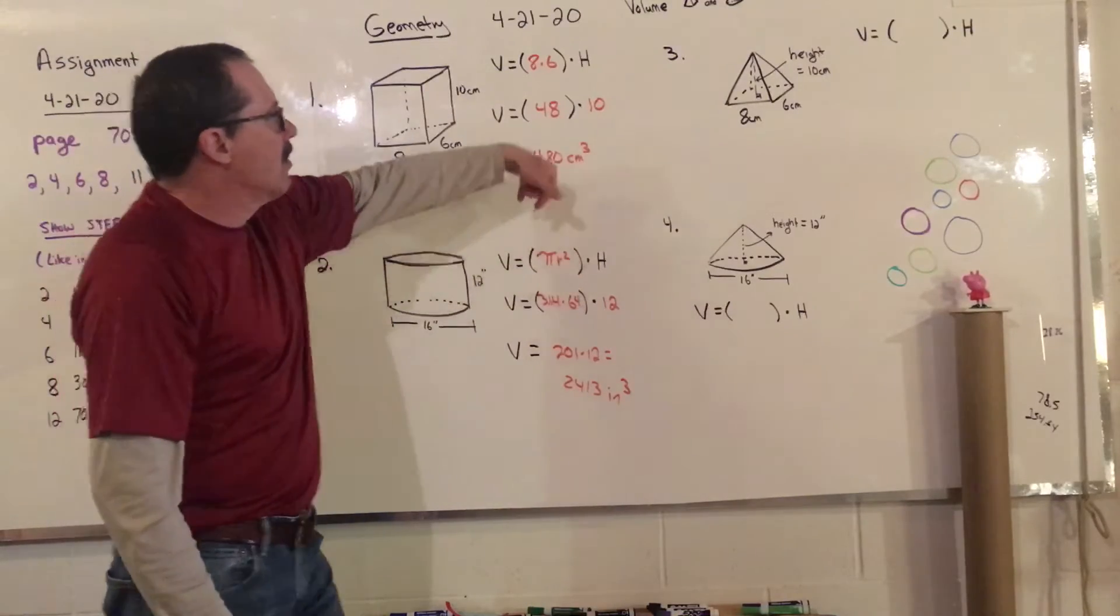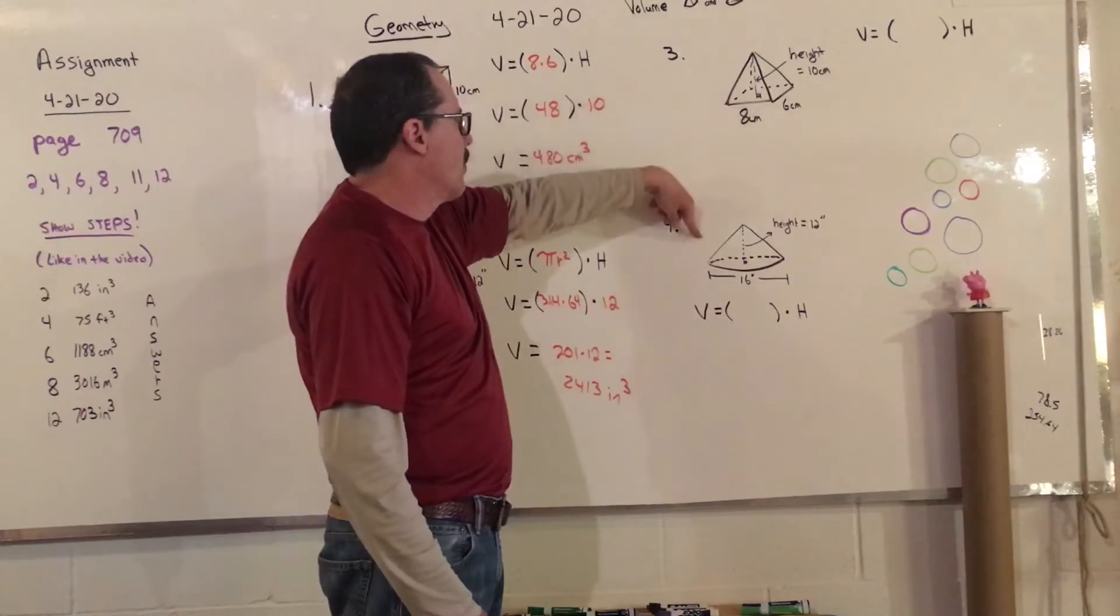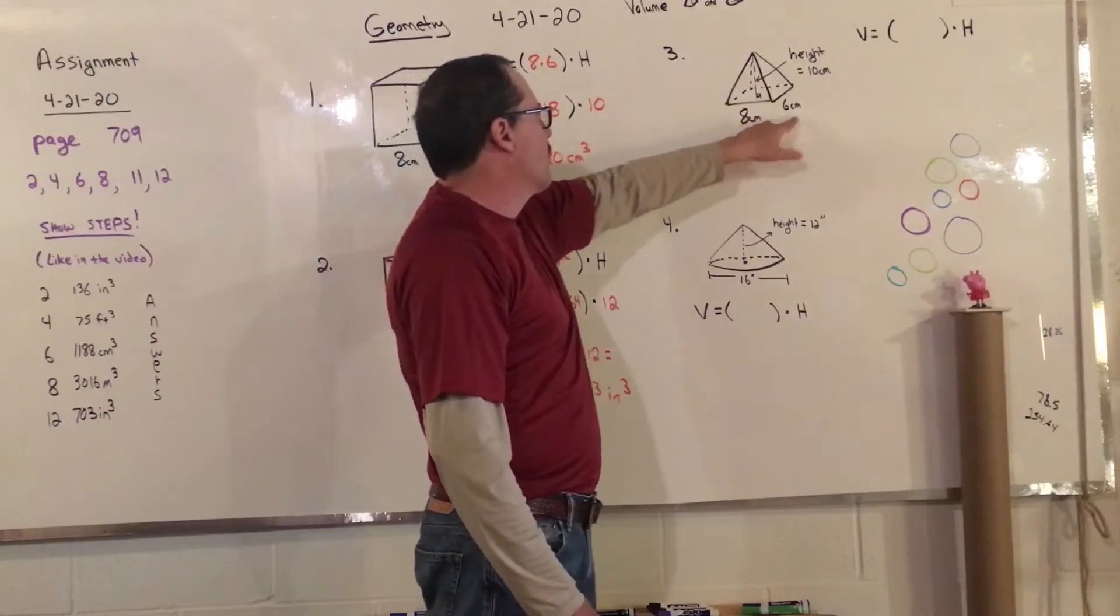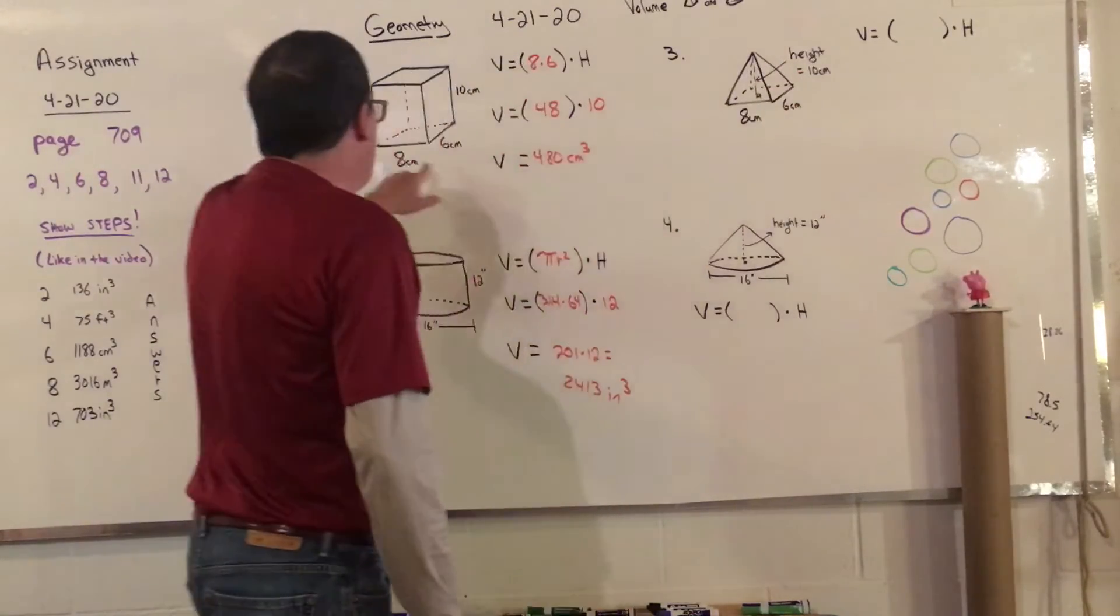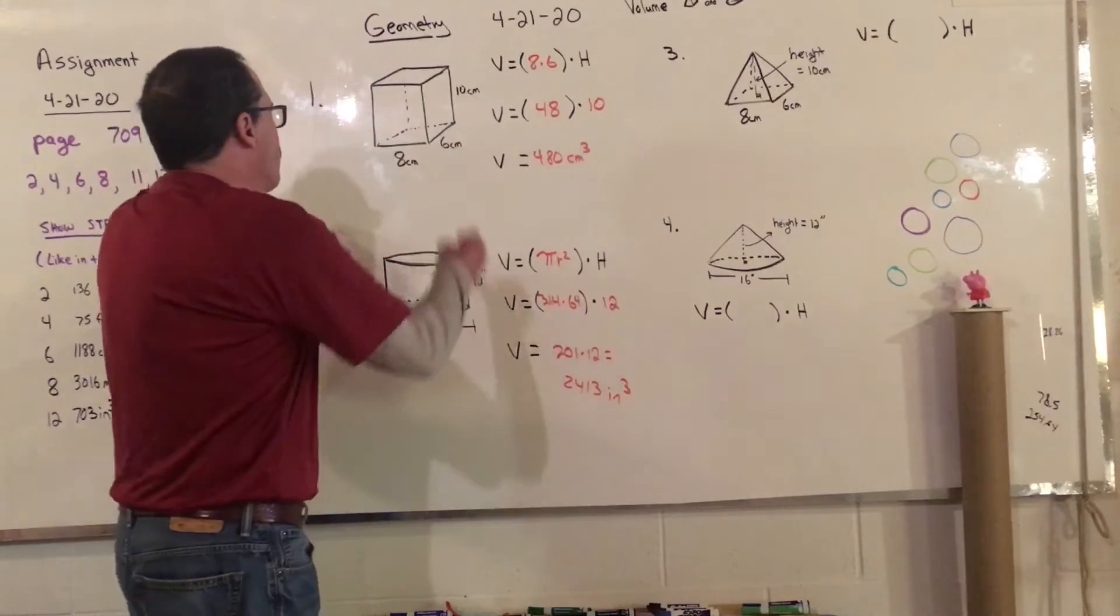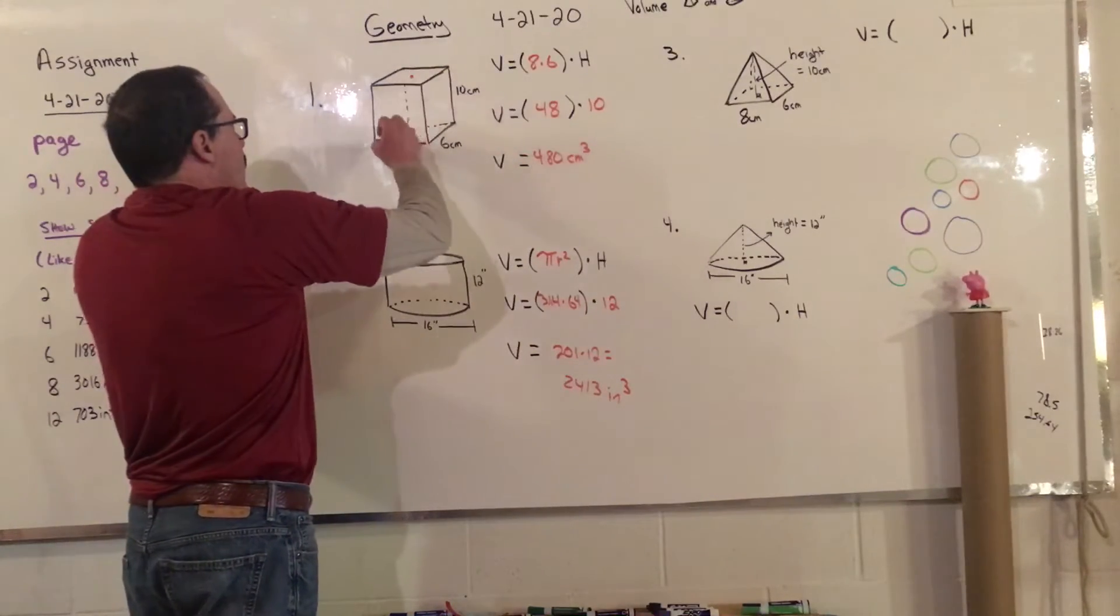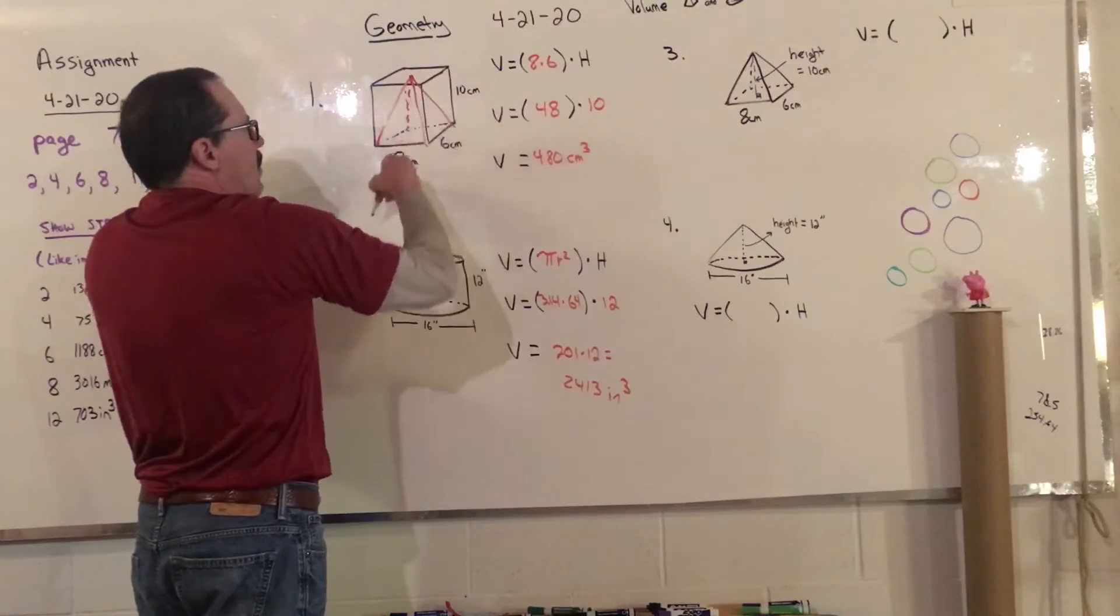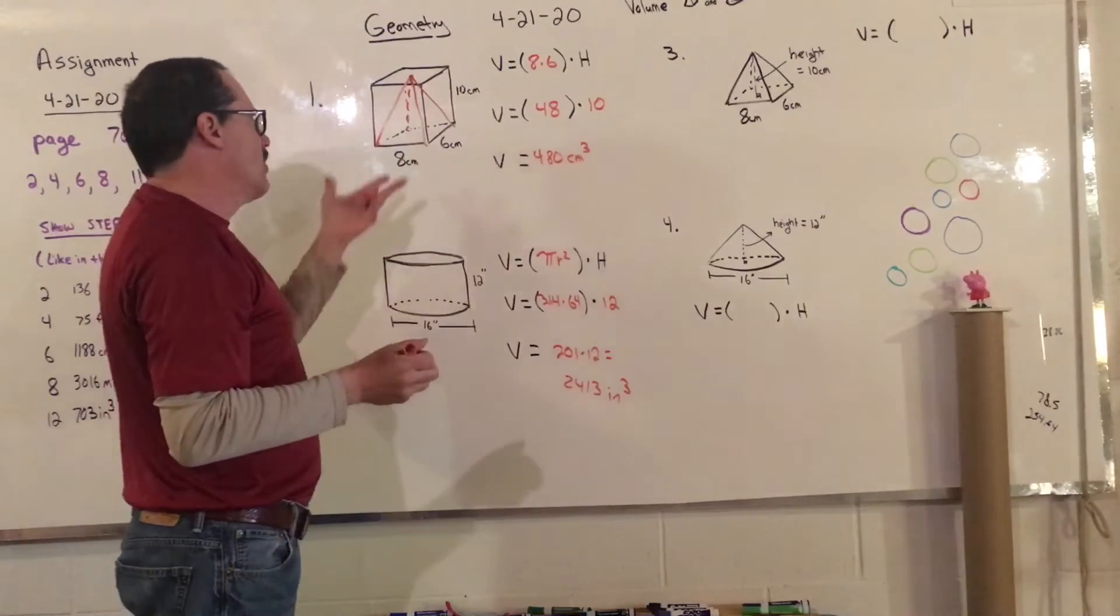Okay, so today what's new is we're going to look at a pyramid, and then we're going to look at a cone. Now a pyramid, if you notice, I made this 8 by 6 by the height is 10. That's exactly the same thing as over here. So if you think about it, the pyramid is just being cut out of the box.